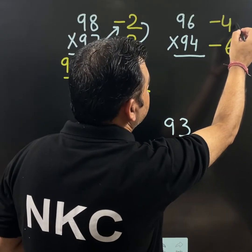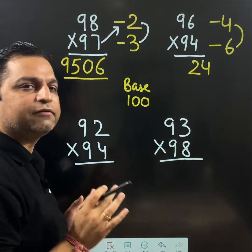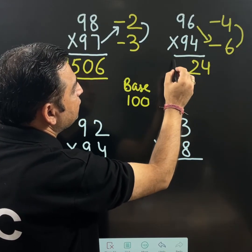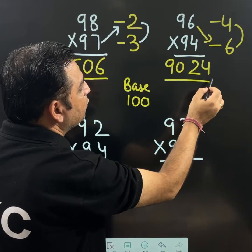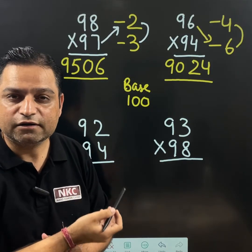Now just you need to multiply. 6 multiply 4 is 24. I have written 24. And just place an arrow. 96 minus 6 is 90. You can check on calculator. Your answer is 9024. And this is 100% correct.